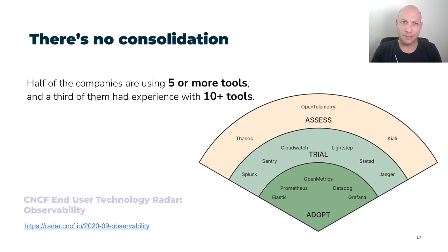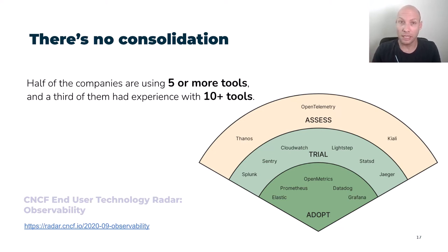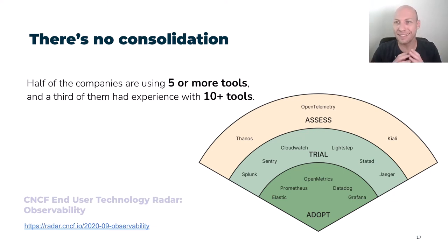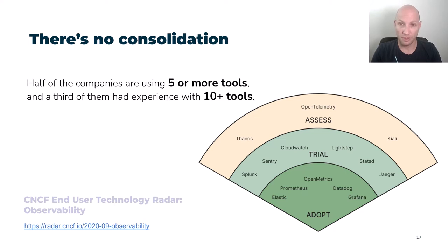Insight number two is less favorable: there's no consolidation in the observability space. In the same CNCF end user technology radar, it was very clear that half of the companies are using five or more tools — it's astonishing. A third of them had experience with 10 or more. This is a serious problem of tool sprawl. Many tools create many data silos, and then we find ourselves very limited in our ability to ask and answer questions when they require correlation across different tools and different data silos.